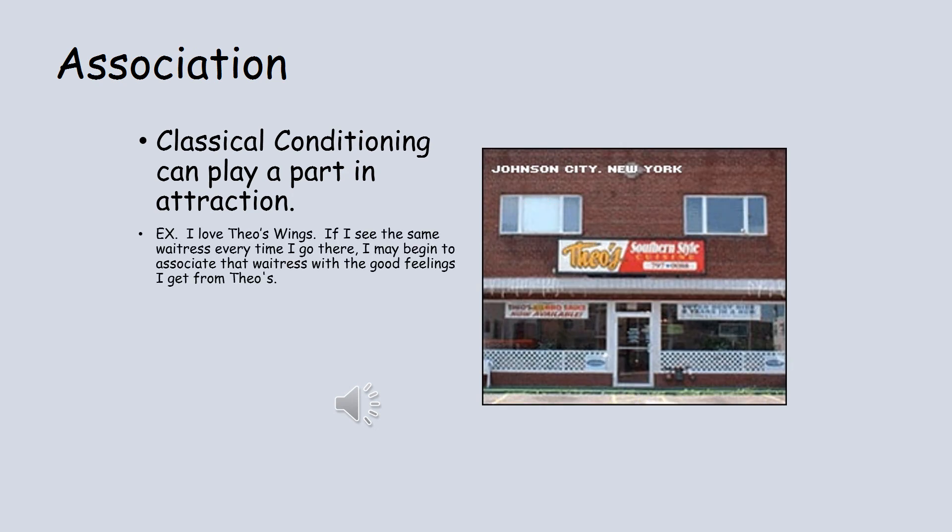The fourth factor of attraction involves conditioning, classical conditioning. Making some association with someone that you like. For example, if someone every day walks in and brings you something you like, let's say chocolate. You love chocolate. So this person comes in every day and gives you a piece of chocolate. You will begin to associate that person with that good feeling you get when they give you the chocolate. And in return, you will start to like them.